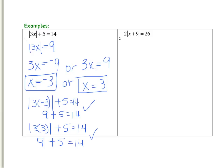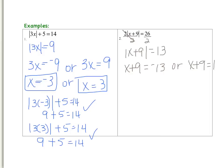Now let's look at the second example. In order to isolate the absolute value expression, I need to divide each side by 2. Those 2's will cancel out, so I have the absolute value of x plus 9 equals 13. Now I can rewrite the absolute value equation as a disjunction. So I am going to take x plus 9 and set it equal to negative 13, or take x plus 9 and set it equal to positive 13. Now let's solve each equation.